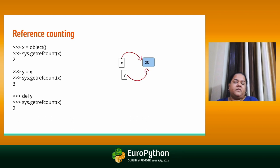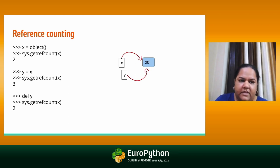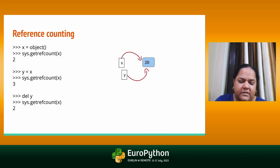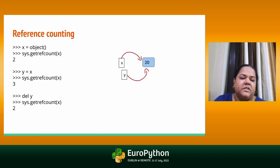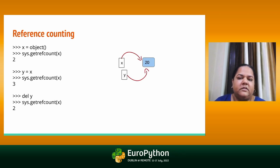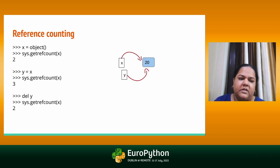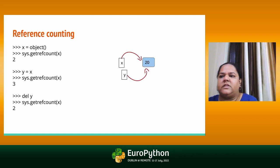Now when you assign a new variable y with the value of x, both x and y are pointing to the same memory location, and the reference count of that particular Python object increments. When you delete variable y, and if it is referencing any other object, the reference count of that variable will decrement. So when we run getrefcount again, it comes back down. That's how reference counting works in general.